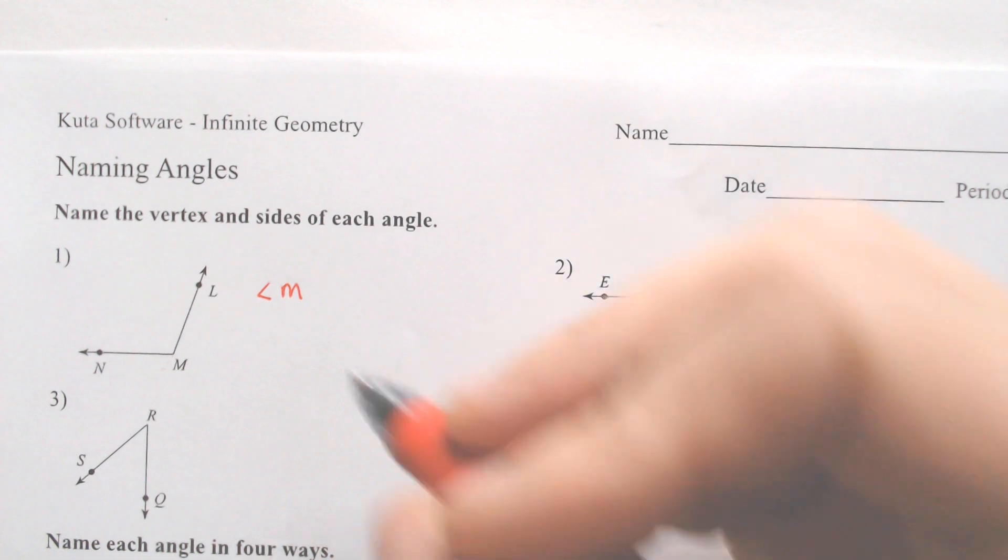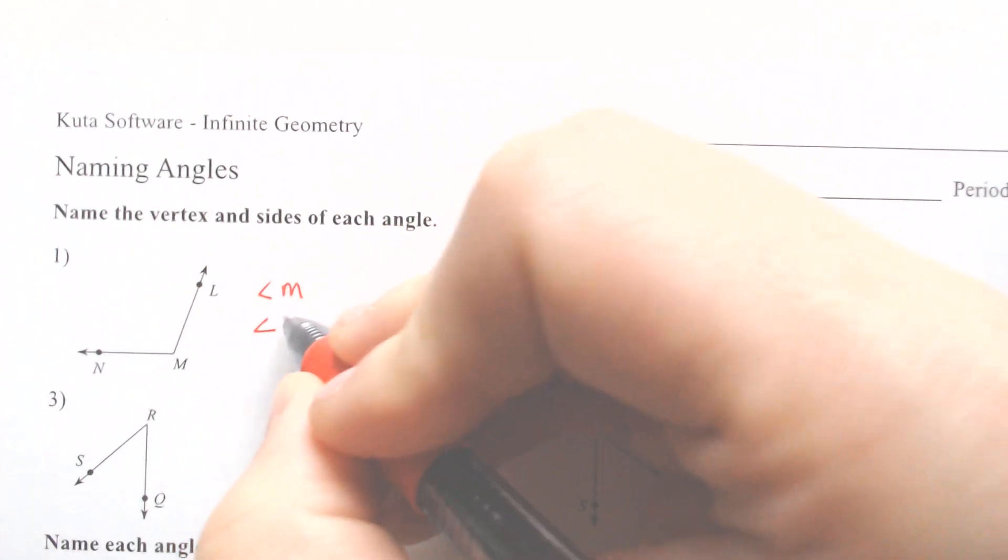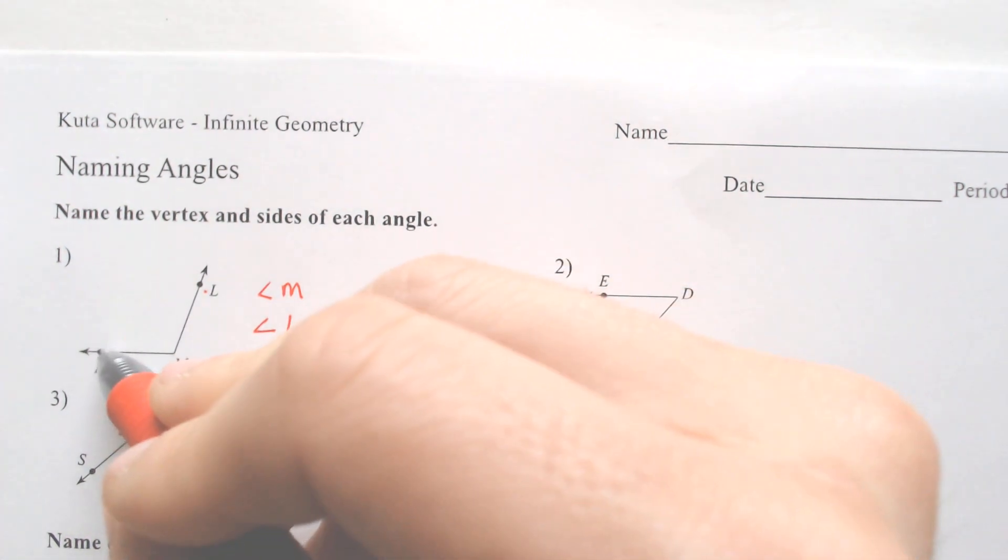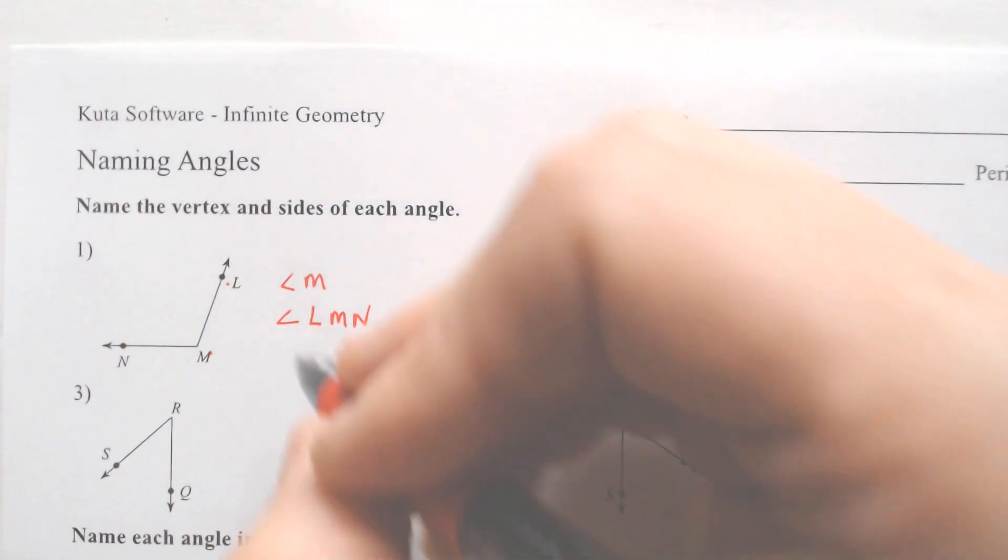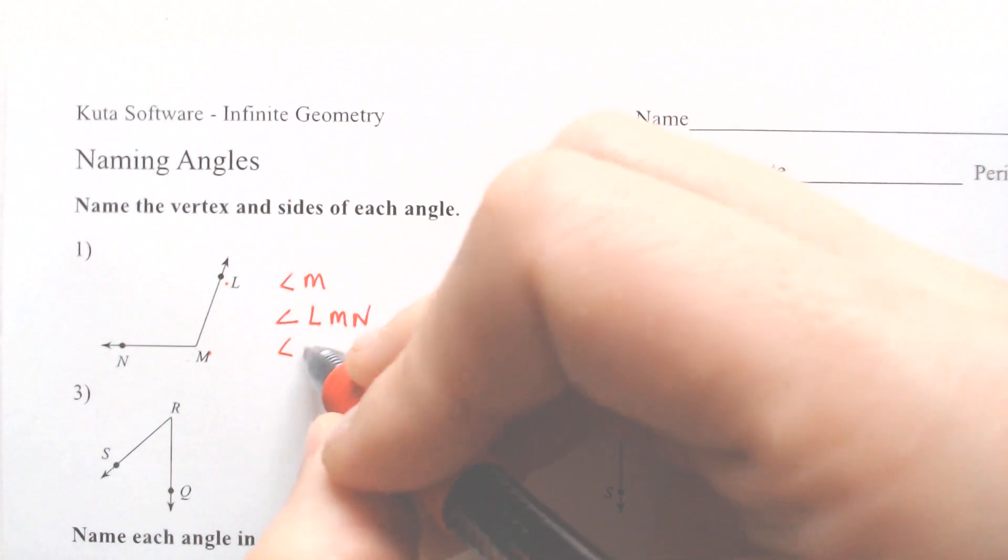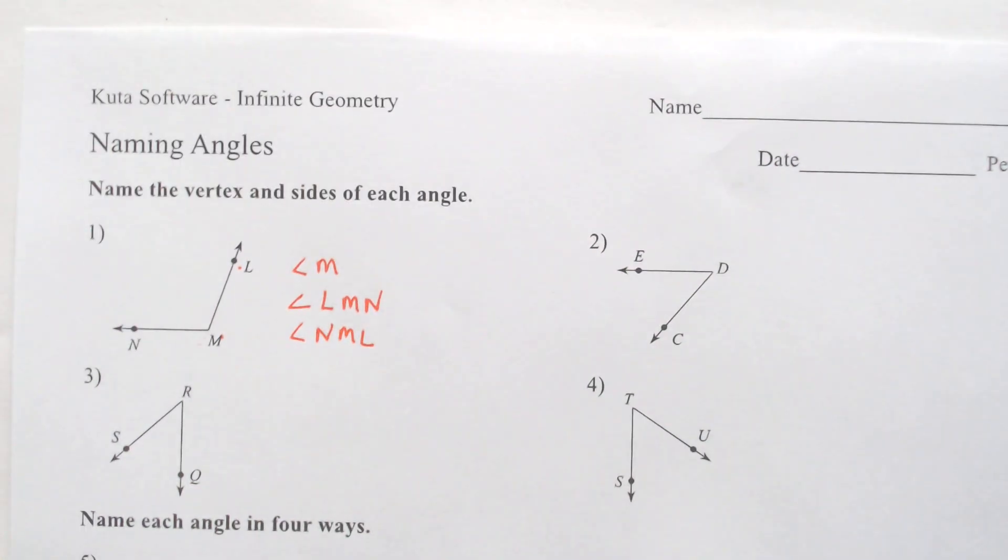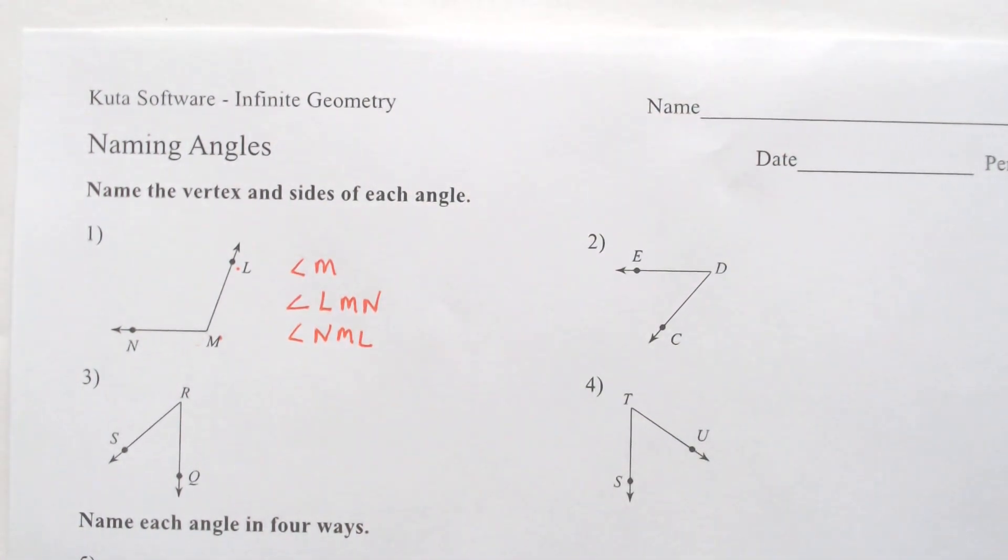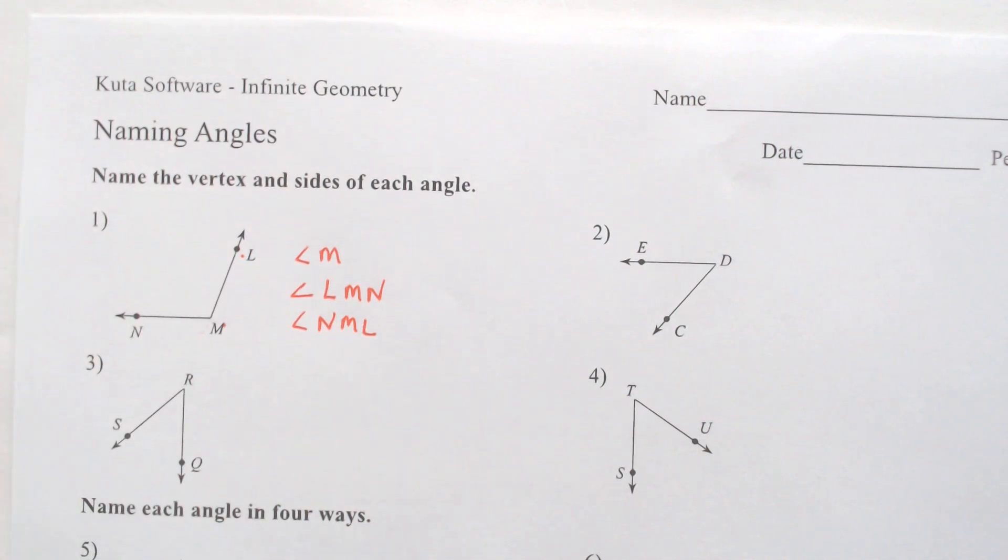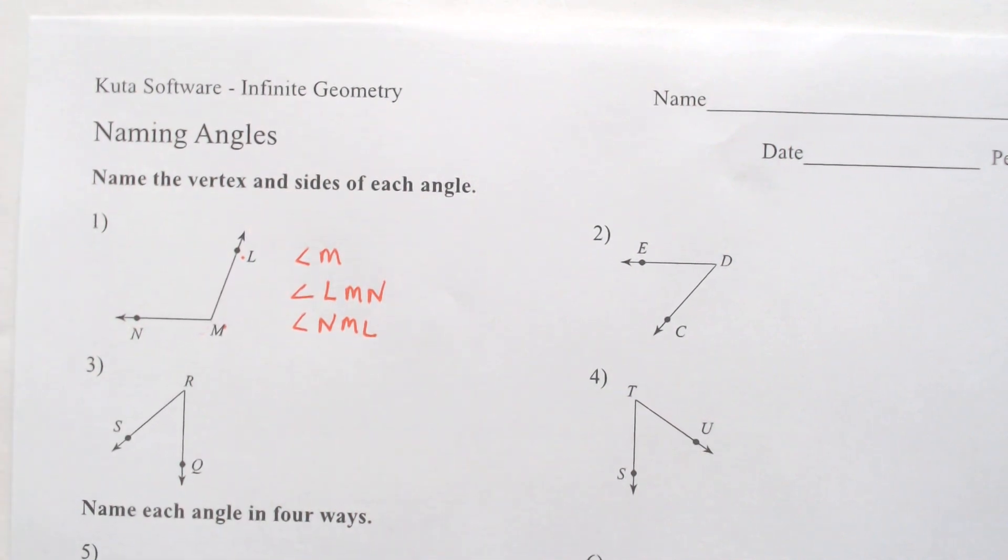So another way to call this angle is angle L M N, where you go from L to M to N. And another way you could call it is just going the other way around, N M L. All three of those are appropriate. The bottom two are probably a little bit more appropriate, but the top one is the lazy answer, and you can get away with it some of the time, not all of the time.